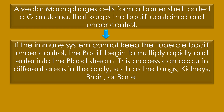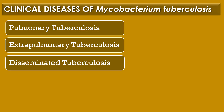The alveolar macrophage cells form a barrier shell called a granuloma that keeps the bacilli contained and under control. If the immune system cannot keep Mycobacterium tuberculosis under control, the bacilli begin to multiply rapidly and enter the bloodstream. This process can occur in different areas of the body such as lungs, kidneys, brain or bone. Mycobacterium tuberculosis results in three clinical diseases: pulmonary tuberculosis, extra-pulmonary tuberculosis, and disseminated tuberculosis.